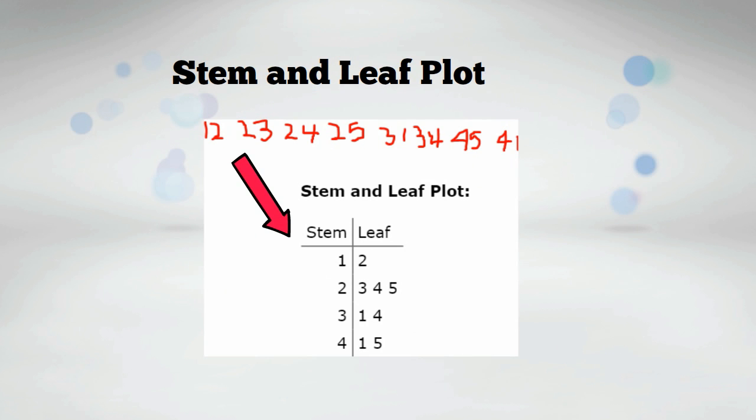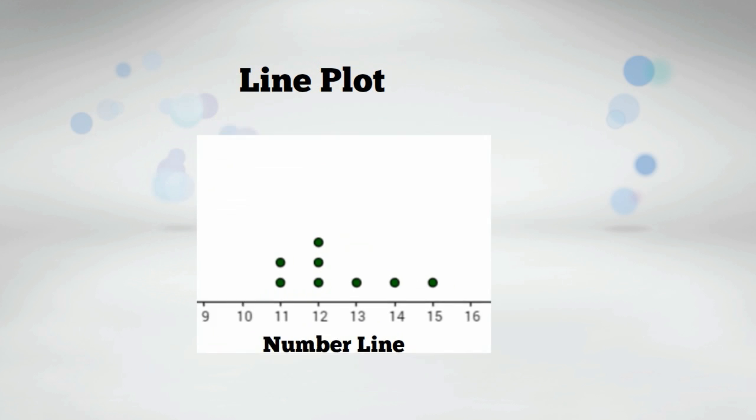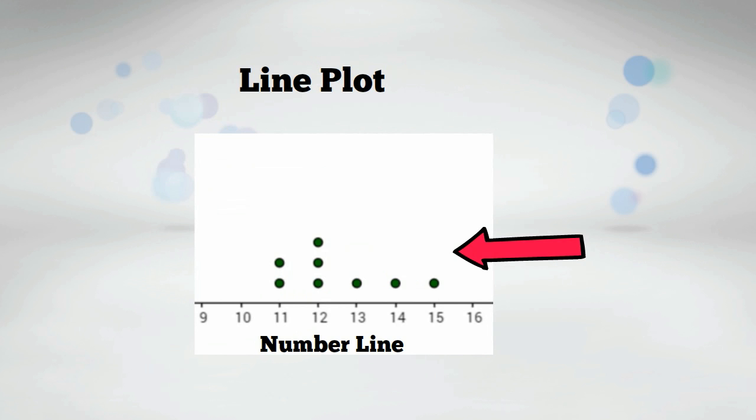The stem is usually the first number and the leaf is usually the other number or digit. A line plot is a graph that shows the frequency of data along a number line. It is best to use a line plot when comparing fewer than 25 numbers.